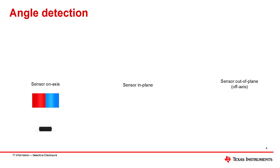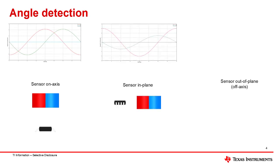3D sensors offer great mechanical flexibility as they can be placed anywhere near the rotating magnet where sufficient magnetic flux density is present. Some common examples are on-axis, where field components are near ideal, in-plane, and out-of-plane, which is also referred to as off-axis.